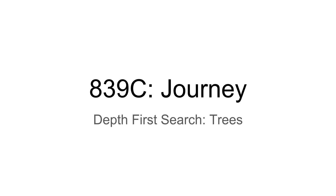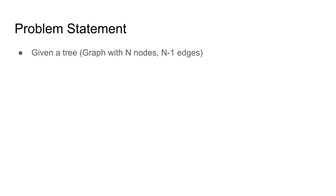Let's consider problem 839C, Journey. Journey is a depth-first search on trees problem. The problem statement is as follows: you're given a tree, which is a graph with n nodes and n-1 edges such that for every pair of nodes, there's exactly one path connecting them. In this problem, n is up to 100,000, which suggests we need an O(n) or O(n log n) algorithm, because an O(n²) algorithm will be too slow.